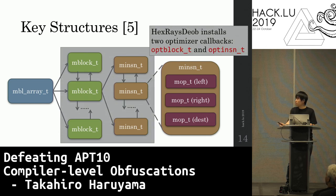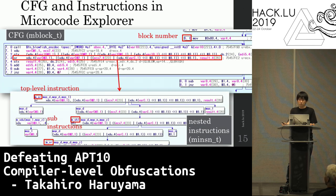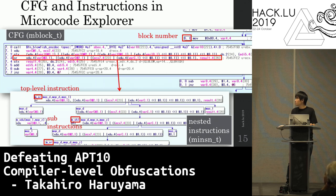hexrays.deop installs two optimizer callback functions: OptoBlockT for control flow flattening, and OptoIncentT for opaque predicates. Using these structures, the microcode explorer displays the control flow graph and instructions. Each basic block has a block number that is unique in one maturity table, and instructions can be nested. In this example, the top-level instruction is R, and shift left and another R are sub-instructions. This difference is important in data flow tracking of opaque predicate patterns, which I will explain later.